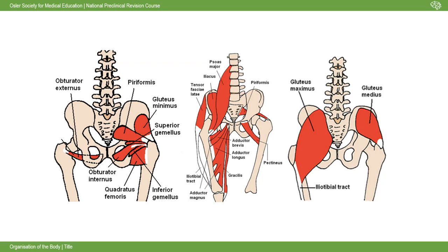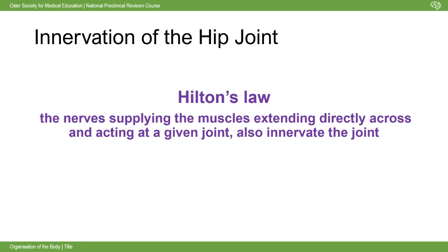There are many muscles around the hip - read these in your textbook. Key ones include gluteus maximus, gluteus medius, gluteus minimus, psoas major (often in MCQs), and piriformis - important for piriformis syndrome and sciatica, especially in women. Know which muscle causes each movement: flexion, extension, internal rotation, lateral rotation, abduction, and adduction. Applying Hilton's law, the nerves supplying muscles that cross and act on a joint also innervate that joint.